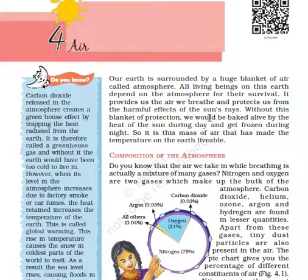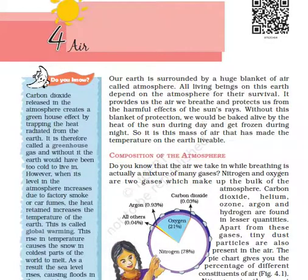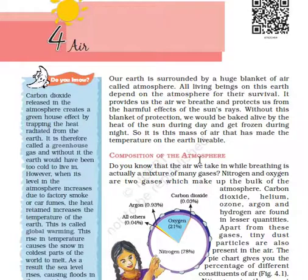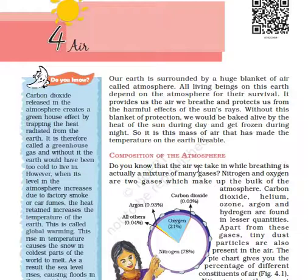The atmosphere provides us the air we breathe and protects us from the harmful effects of the sun's rays — those are called UV rays, full form: ultraviolet rays. Without this blanket of protection, we would be baked alive by the heat of the sun during the day and get frozen during the night. It is this mass of air that has made the temperature on earth livable.